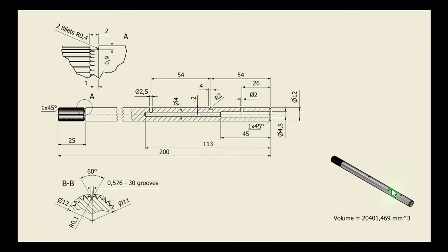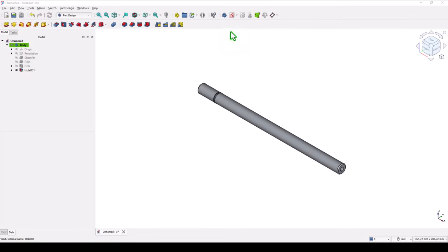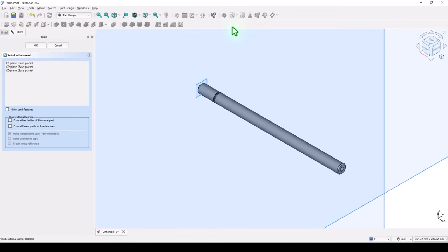Next is this channel. You see: radius 2, depth of 2, and 4 millimeters. New sketch.